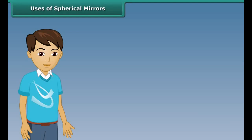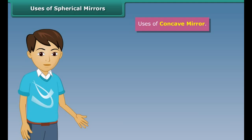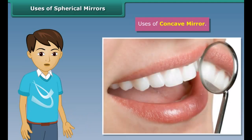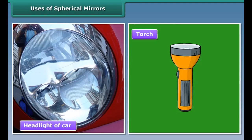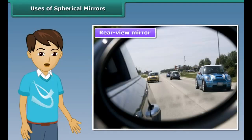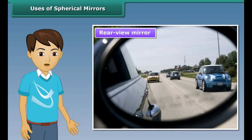Uses of spherical mirrors. Concave mirrors are used by dentists to obtain a magnified image of the teeth. They are also used as reflectors in torches and headlights of cars and scooters. Convex mirrors are used as rear-view mirrors in cars and motorcycles to help drivers see the traffic behind them.